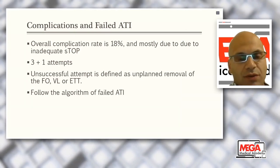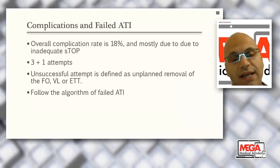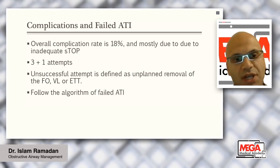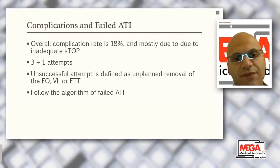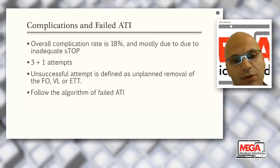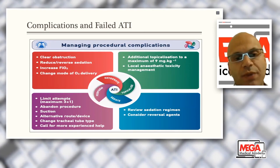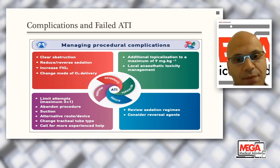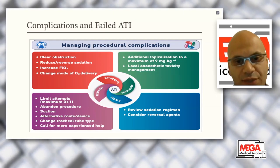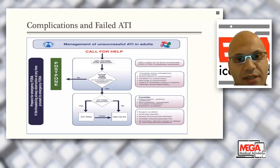Complications of failed awake tracheal intubation: the overall complication rate is around 18%, mostly due to inadequate topicalization. Per the DAS guideline, stop after three attempts — the last being by the most senior and experienced operator. An unsuccessful attempt is defined as unplanned removal of the fiber optic, endoscope, or endotracheal tube from the patient. There is a specific algorithm to follow in cases of failed ATI, including managing oxygenation problems by increasing FiO2 or changing the oxygen delivery mode.